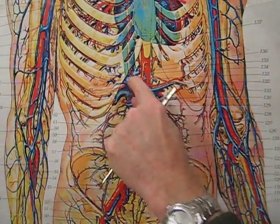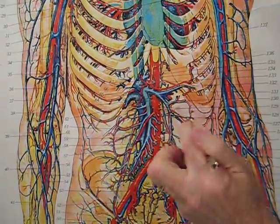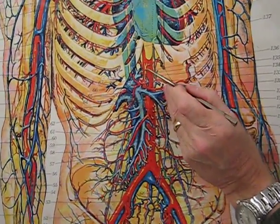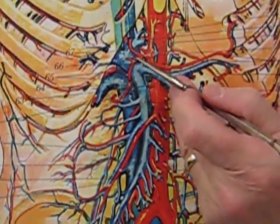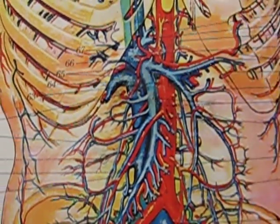So if the stomach's here, lesser curvature's here, you're going to have an inflow of blood into it by the left gastric artery and right gastric artery. They anastomose with each other.